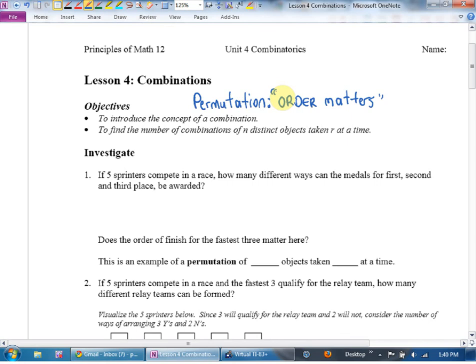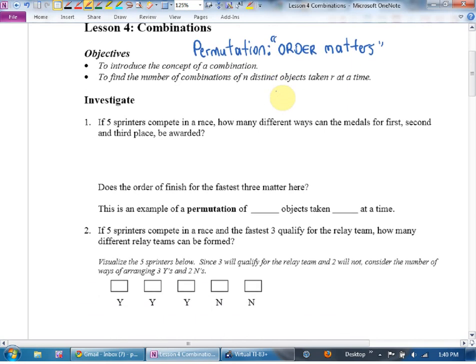Let's try and give you a good example of the difference between the two. If five sprinters compete in a race, how many different ways can the medals for first, second, and third place be awarded? Well, first place, how many choices do I have for the first place medal? Five. How many choices for second place? Four. How many choices for third place? You'll notice when I wasn't sure I fell back on the fundamental counting principle, but now that I see 543, I recognize that's actually 5P3.